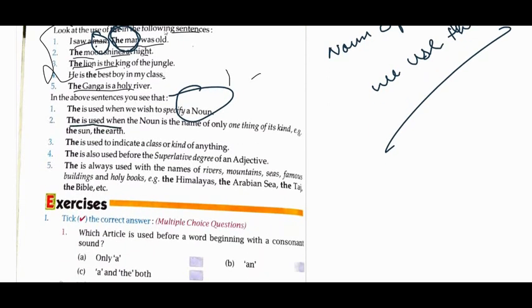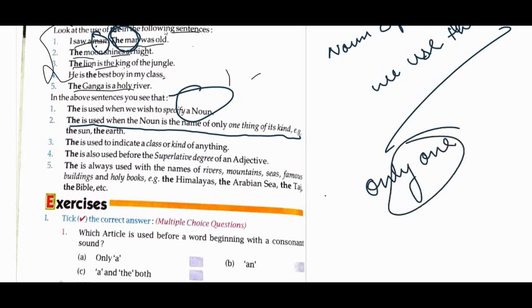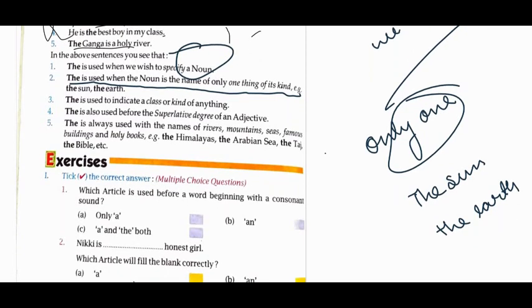'The' is used when the noun is the name of only one thing of its kind. Look, 'the' is used for only one thing. Like the sun, the earth. Only one thing - specific.